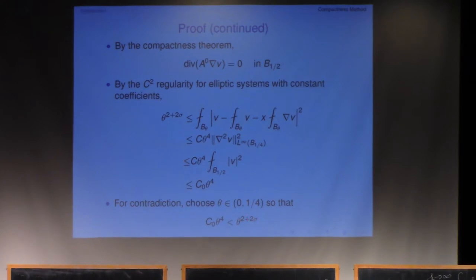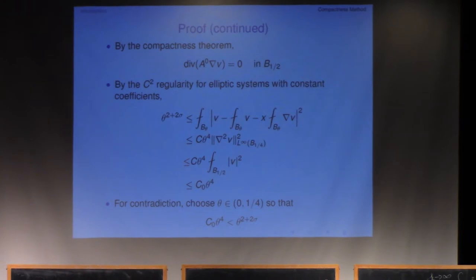Sigma is less than 1. The C0 here depends only on the dimension and the ellipticity constant mu. Therefore, the choice of theta only depends on the dimension and ellipticity constant mu. And that's the end of the proof for the first lemma.